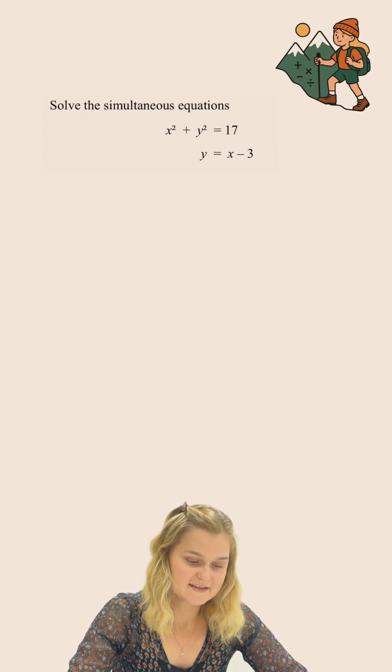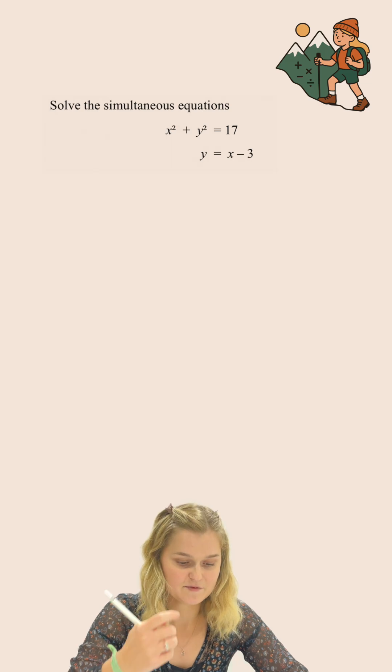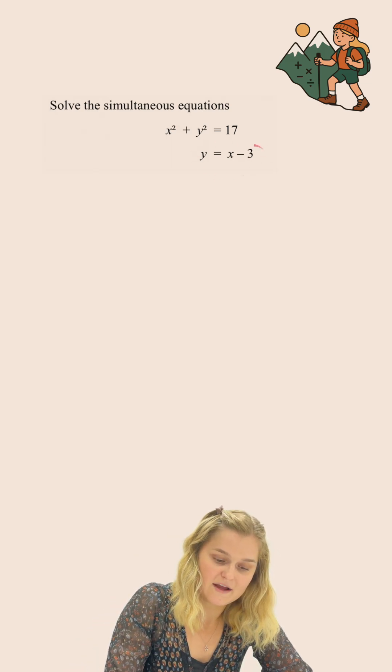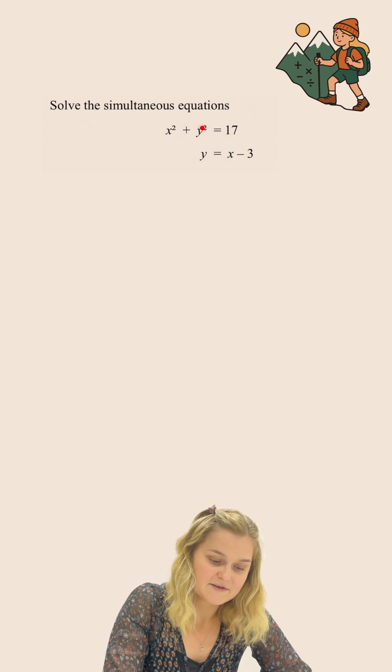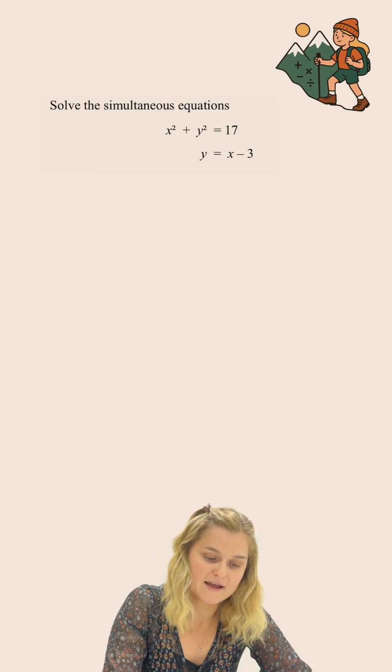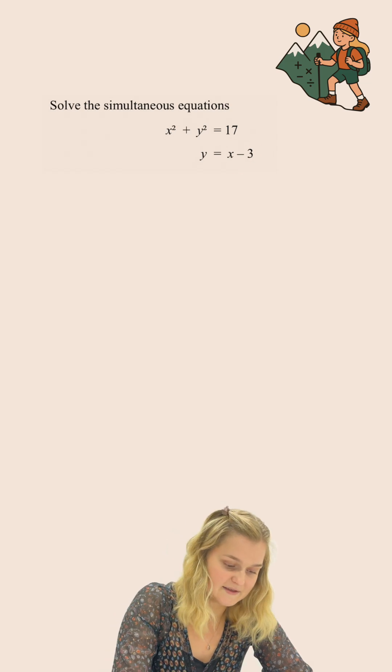Solve the simultaneous equations x squared plus y squared equals 17 and y equals x subtract 3. In this second equation, I have been told that y equals x subtract 3, and there is a y in this first equation. So I'm going to replace this y in the first equation with x minus 3.